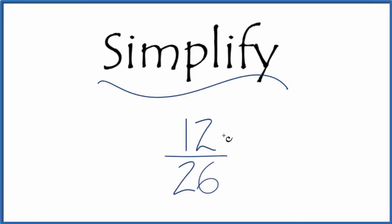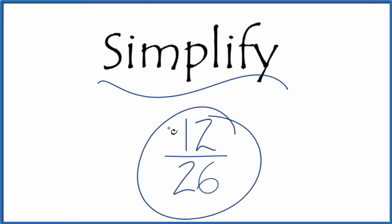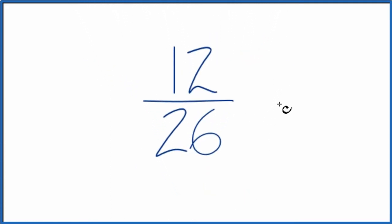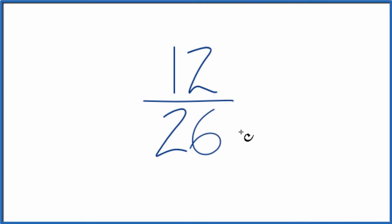Let's simplify the fraction 12/26. What we want to do is find another fraction that's equivalent — has the same value as 12 divided by 26 — it's just that we've reduced it to lowest terms. To do that, we need to find a common factor.